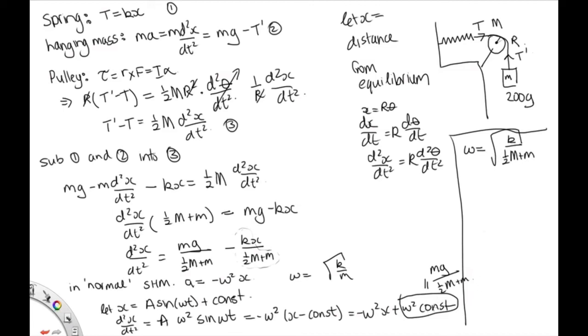We could go ahead and find this constant if we wanted. Omega squared is k over a half M times constant is equal to this thing. So our constant is equal to mg over k, which is really just the equilibrium conditions. OK. But all we were asked to find was the angular frequency. And that's what we found here.